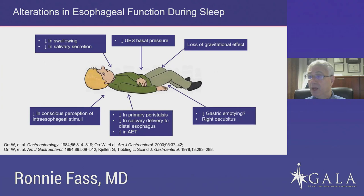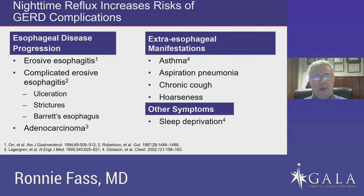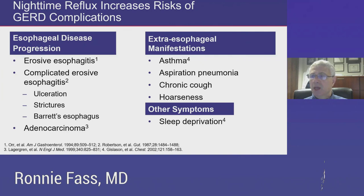Nighttime reflux increases risk for GERD complications. Reflux during nighttime has been shown to be the most malignant type of reflux. Patients with nighttime reflux are more likely to develop erosive esophagitis, and more likely to develop complicated GERD — including ulceration, strictures, Barrett's esophagus, or even adenocarcinoma of the esophagus — compared to those without nighttime reflux. In addition, patients with nighttime reflux are more likely to develop extraesophageal manifestations of GERD: asthma, aspiration pneumonia, chronic cough, and hoarseness.